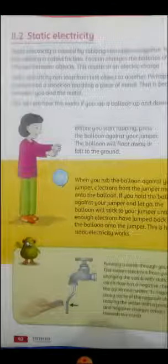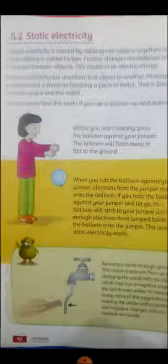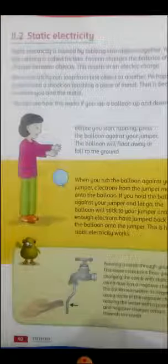Perhaps you experience a shock on touching a piece of metal. This is because electrons jump between you and metal. You can see how this works if you rub a balloon up and down your jumper. Before you start rubbing, press the balloon against your jumper. The balloon will float away or fall to the ground.